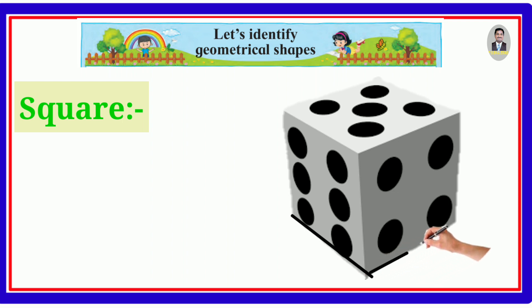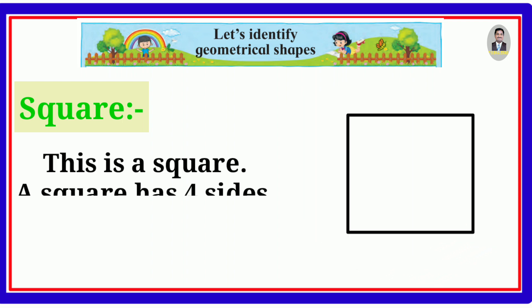Square. Let's trace the edges of the dice. This is a square. A square has 4 sides.